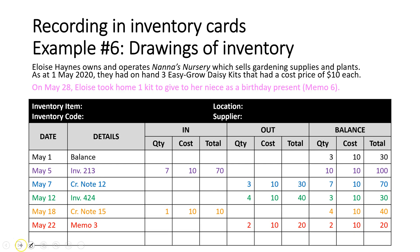Transaction six: on May 28, the owner Eloise took home one kit to give to her niece as a birthday present. The source document is Memo 6, and this is a drawings of inventory. We record one item leaving the business in the Out column, which means at the end of this month — if this was the last transaction — we would only have one Easy Grow Daisy Kit remaining.